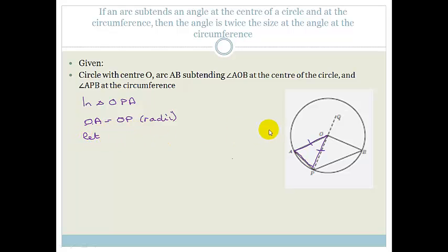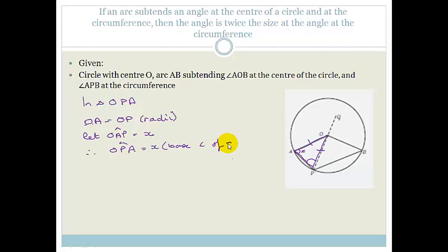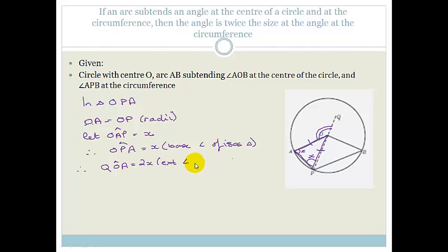We let angle OAP equal X. Therefore angle OPA also equals X — base angles of an isosceles triangle. Then because this is an exterior angle, it equals the sum of the two interior opposite angles.